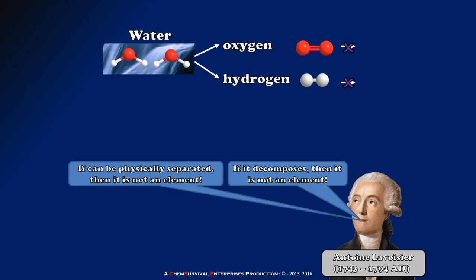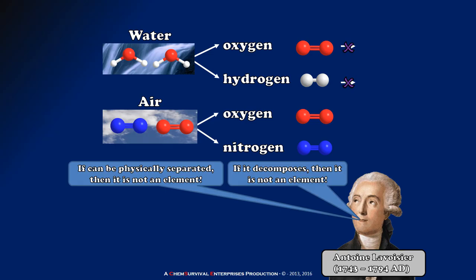Lavoisier also reasoned that if a substance can be physically separated into two or more materials, then that substance also cannot be an element. And, he used this idea to put yet another classical element to the test, this time, air. He was able to physically separate air into oxygen and nitrogen, but his best attempts to separate those into other materials failed. So, Lavoisier had proven that water and air are not elemental substances, but that hydrogen, oxygen, and nitrogen, in fact, are.